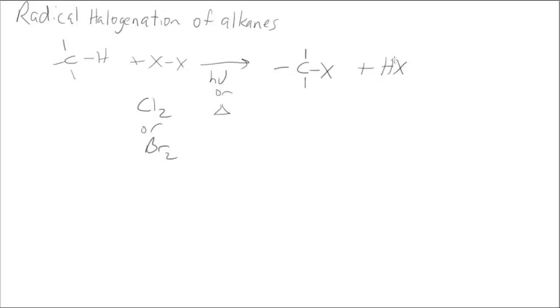So the question is how does this happen? Radical mechanisms always have three steps in them, and this is vital information for you to know. You really need to know all three of these steps. We start with initiation. That is formation of radicals from non-radicals.